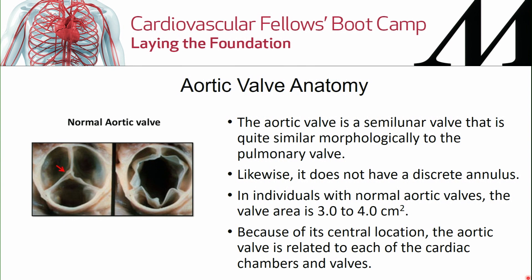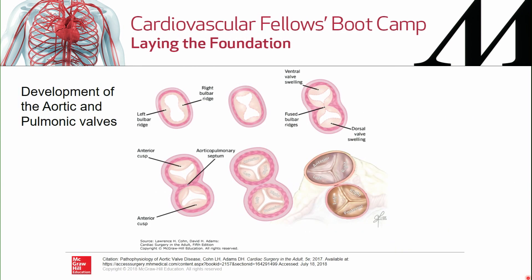Here is the embryology of development of both the pulmonic and aortic valves. You start with left and right bulbar ridges embryologically developing, forming outpouchings toward the center which eventually fuse. During this time, subvalvular swelling develops that will eventually become the leaflets of the valve. As development continues, an anterior cusp of the pulmonic valve begins to form.